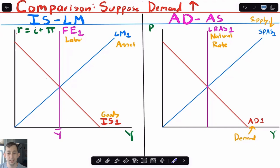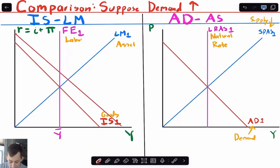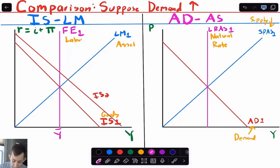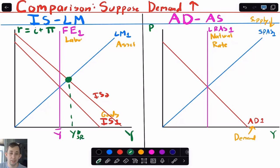Let's take both models, increase demand, and walk through what happens in each to demonstrate how they're telling you the same thing about the economy. So suppose we start in the IS-LM model and increase demand — the IS curve is going to shift out, so here's IS2. What we can see is in the short run, the equilibrium is where the LM and IS curve intersect. We're going to have that intersection right here — in green. So here's our new green equilibrium with Y-star in the short run, because the economy is running hot and demand is high.